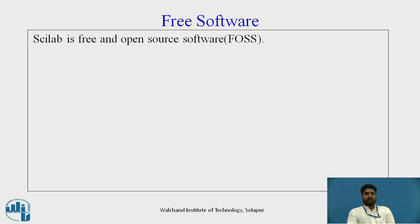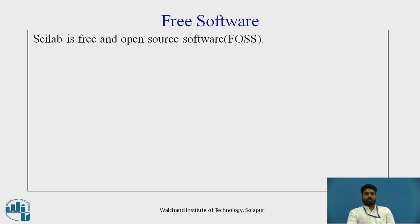Free software: Wikipedia defines free software as follows. Free software, or software libre, is software that can be used, studied and even modified without restriction, and which can be copied and redistributed in modified or unmodified form, without any restrictions. Free software is available free of charge in most cases. There are alternative terms for free software such as software libre and free and open source software, that is called FOSS.